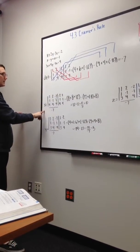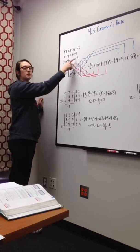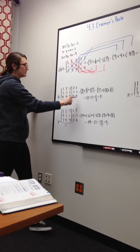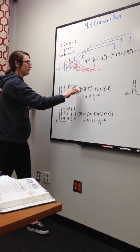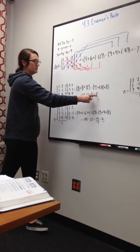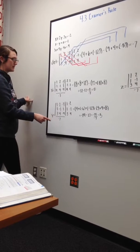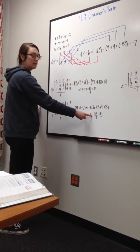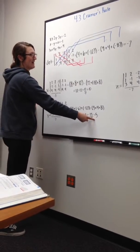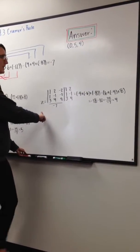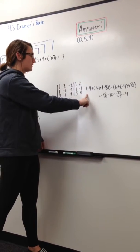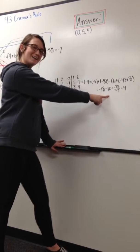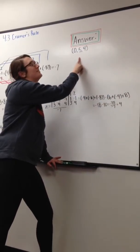After you get negative 7, you need to find x. For x, you always make sure that you substitute the solution for the variable you're trying to find, so it'd be the solution, y, and z. And then you cross everything over, and you get 0. You need to divide 0 by negative 7, and that gives you 0. For y, you're doing the same process — you cross everything over and subtract, and you'll get negative 35. Then you divide negative 35 by negative 7, and you get 5. For z, you're doing the same process again — you cross and subtract everything, and you'll get negative 28, which you divide by negative 7, and you get 4. So your answer will be 0, 5, 4.